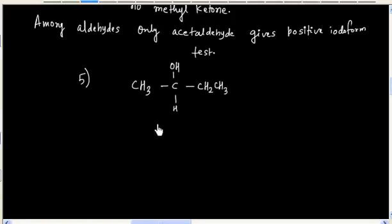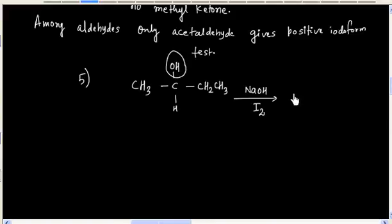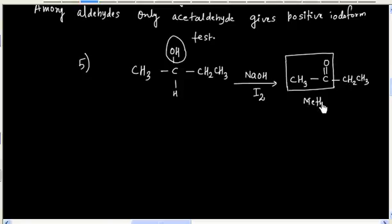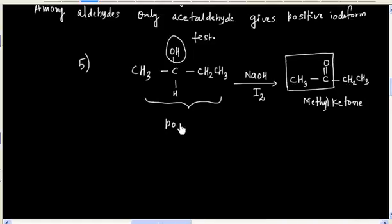Now let us consider this alcohol. We said the Iodoform reagent also acts as a mild oxidizing agent, so this alcohol group gets oxidized to a ketone. Now we have a methyl ketone group present, so this compound will give a positive Iodoform test. This is because the alcohol gets oxidized to a ketone first.